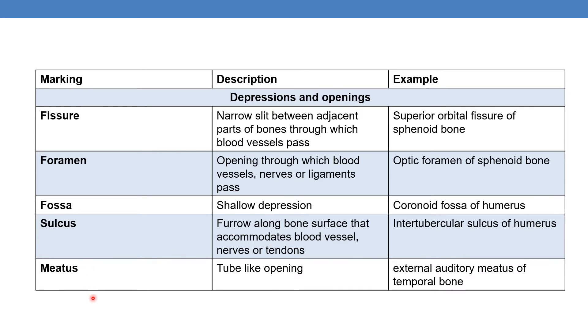Next is meatus — a tube-like opening. An example is the external auditory meatus of the temporal bone.